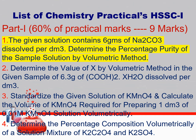It is the list of chemistry practicals HSSC-1 and the major portion part 1. 60% of the practical marks will come from here and it will be of 9 marks. For this major portion there are just 4 practicals given in the list. Today I am going to explain the first practical: the given solution contains 6g of sodium carbonate dissolved per dm³ to determine the percentage purity of the sample solution by volumetric method.